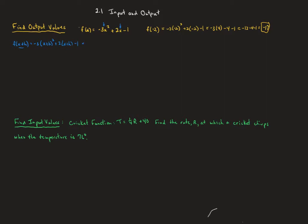Our shortcut for squaring that out is: first one squared is x squared, plus twice the product is 2xh, plus the second one squared is h squared. Distributing that 2 gives us 2x plus 2h, and the minus 1 is still hanging out.